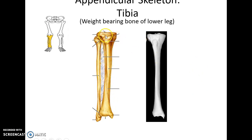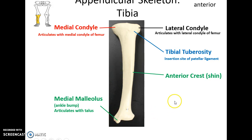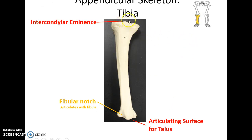Then we have the tibia, the large bone of the lower leg — the weight-bearing bone — and then the thin fibula that's lateral. They're connected by an interosseous membrane. The tibia at the proximal end has a flat medial condyle and a flat lateral condyle — rather than rounded knobs, they're flat. There's also a bit of bone sticking out anteriorly called the tibial tuberosity, which is an insertion site for the patellar ligament. There's a narrow pointed line running along the shaft called the anterior crest. At the distal end on the medial side is the medial malleolus, one of the bumps of the ankle. At the very bottom there's a smooth articulating surface that articulates with the talus of the foot.